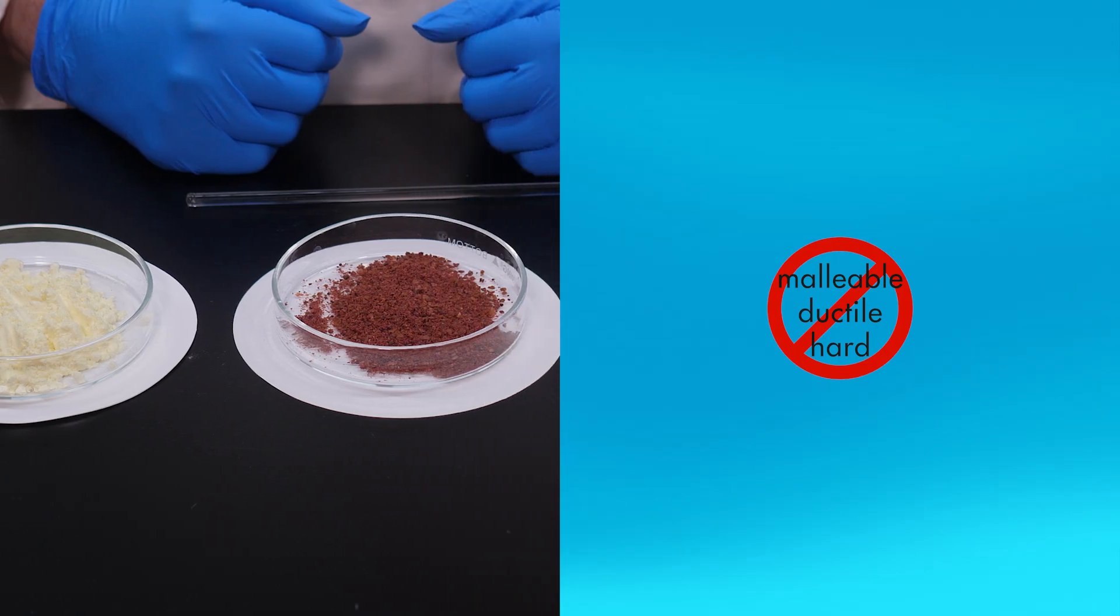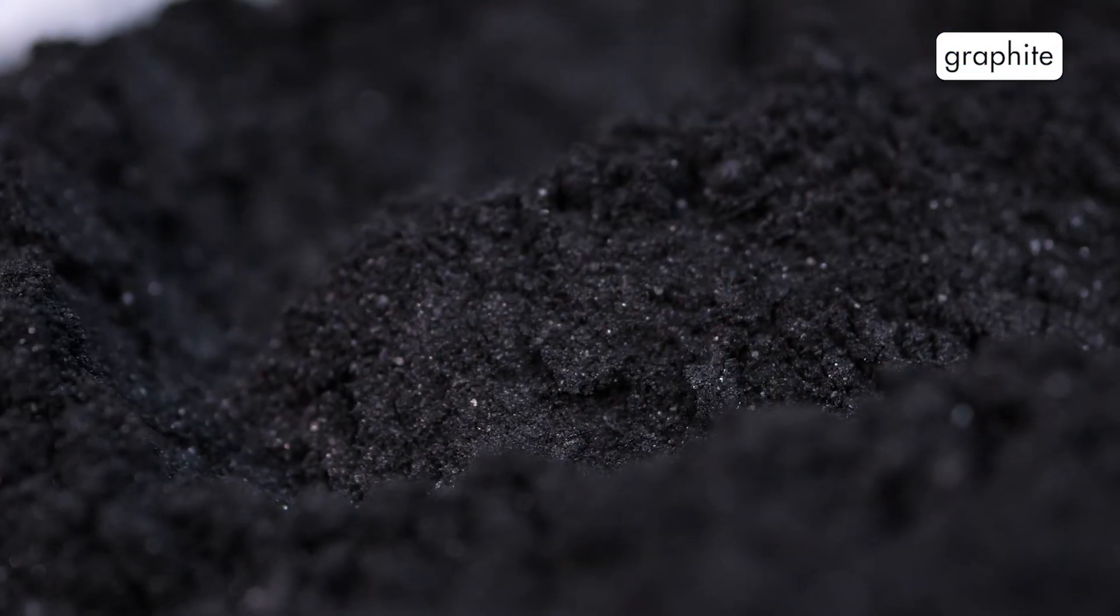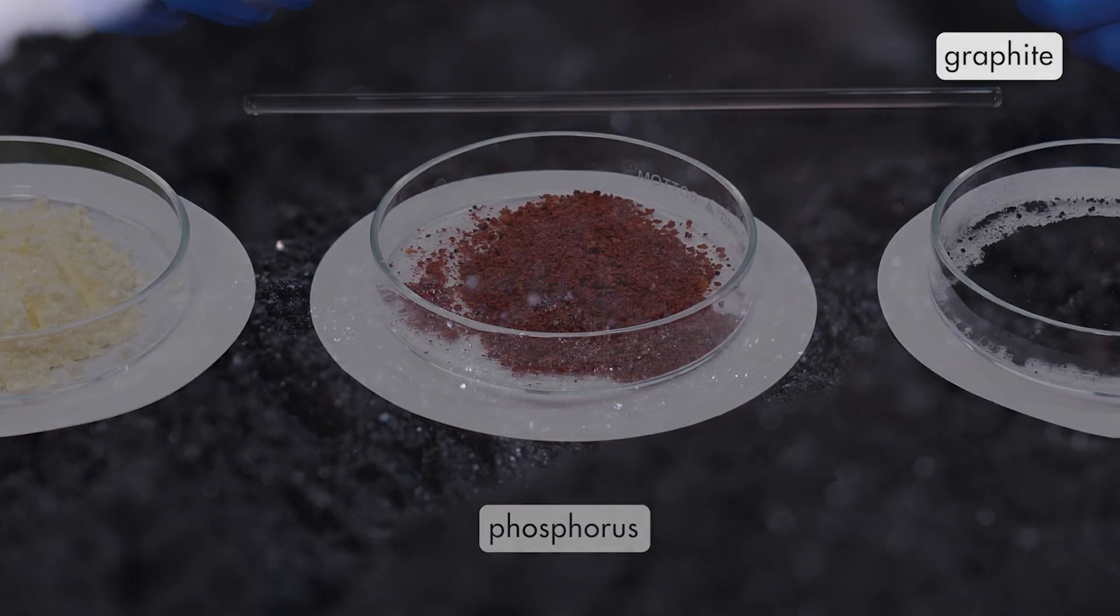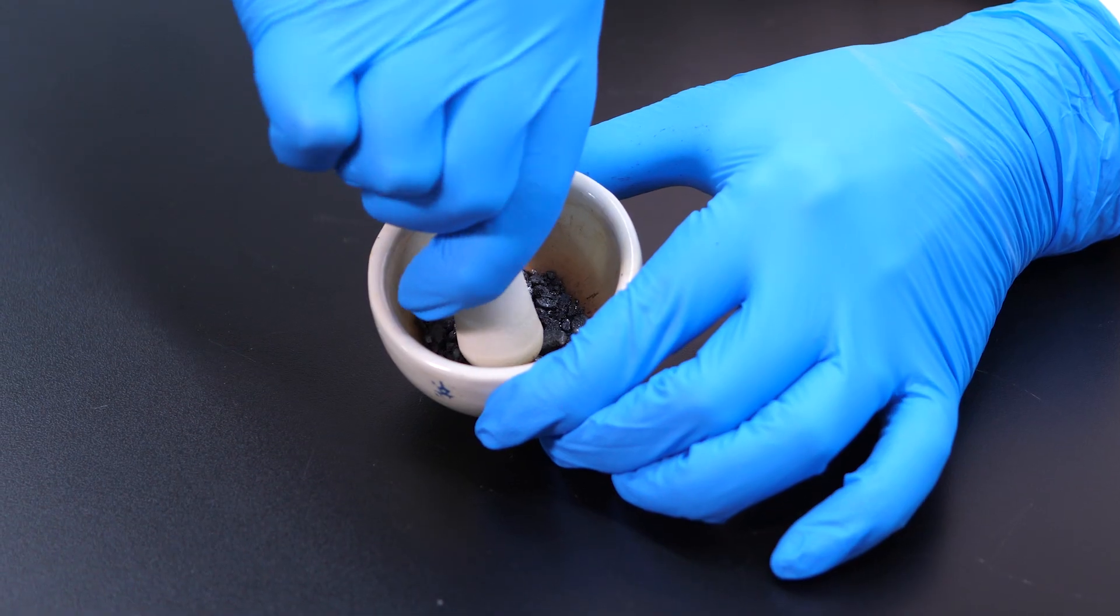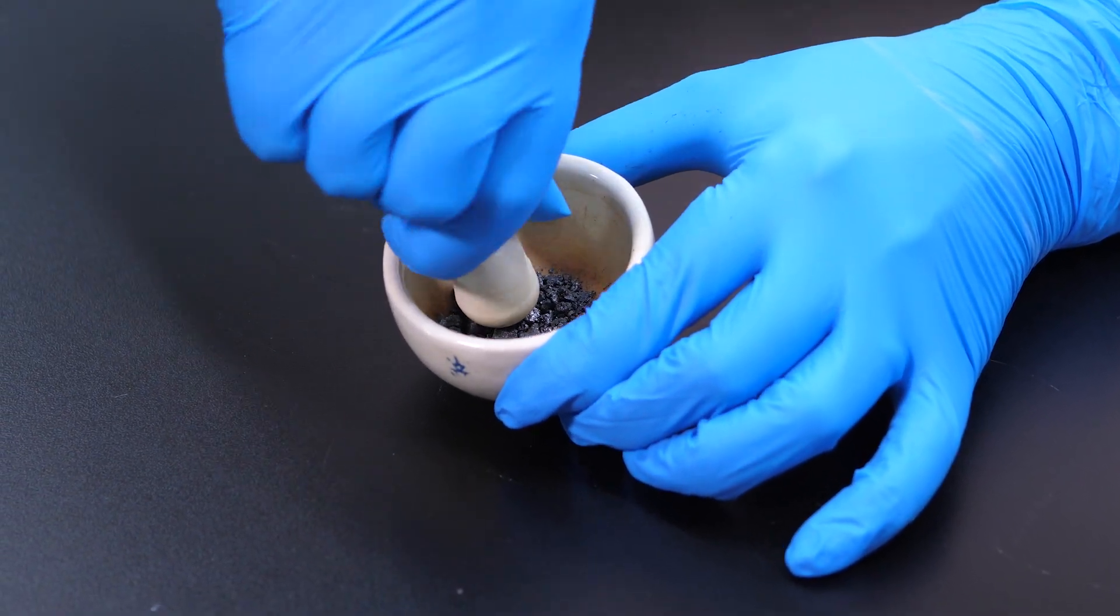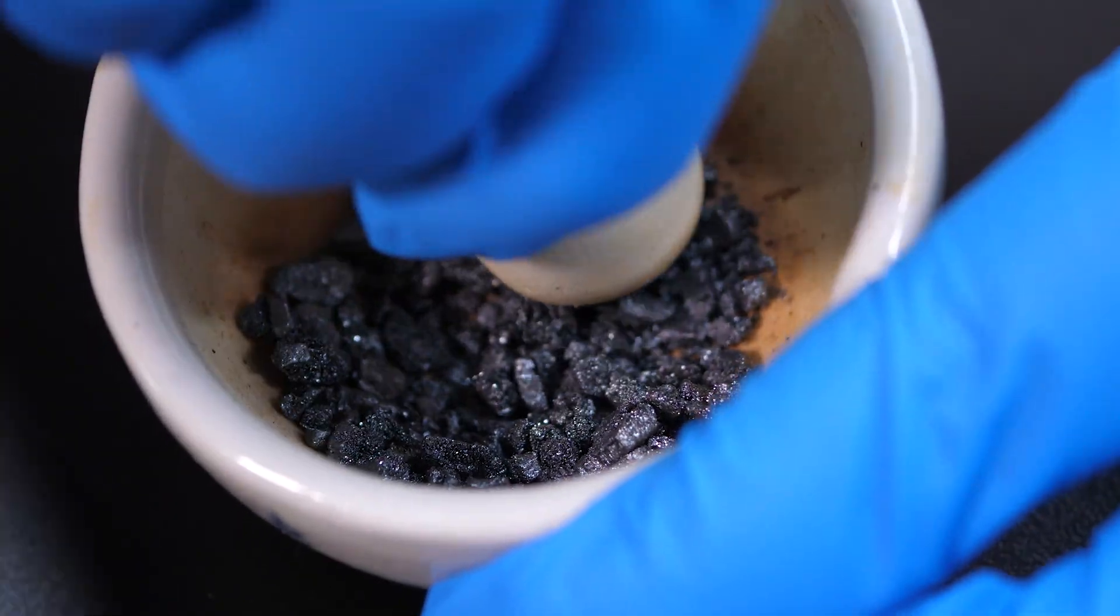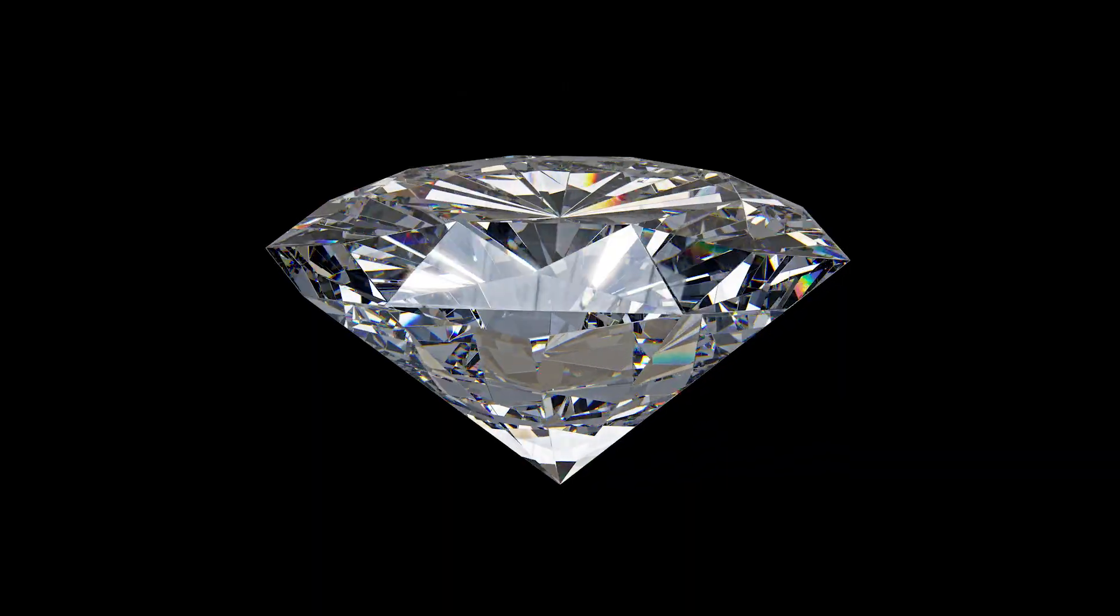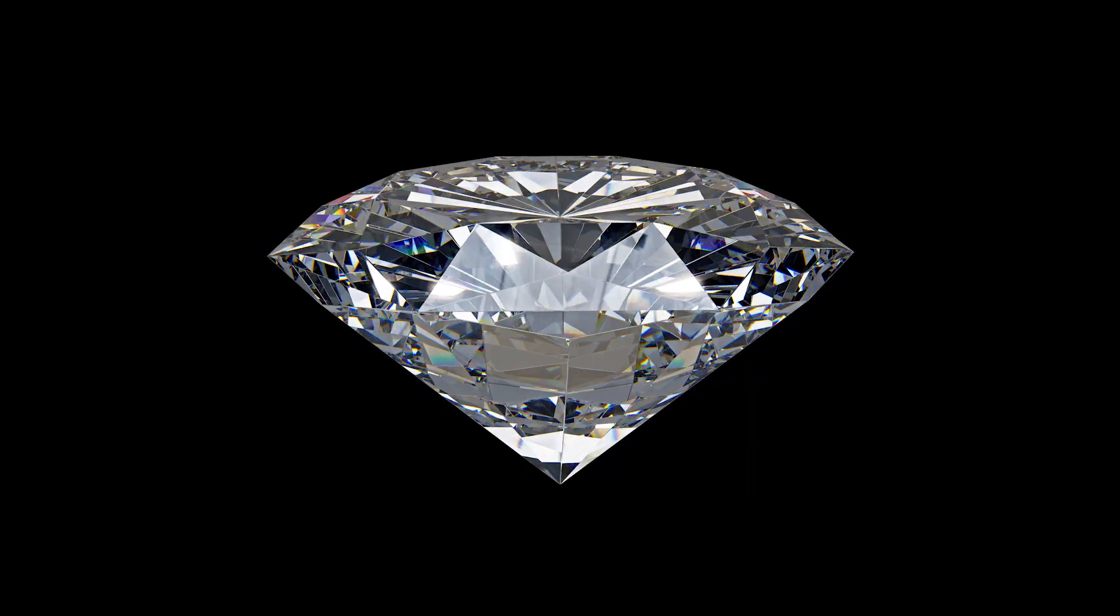Nonmetals are not malleable, ductile, or hard. Some nonmetal solids, such as graphite and phosphorus, are powdery. A few nonmetal solids, such as iodine, are crystalline and brittle. If we grind up iodine crystals, they crush to form a powder. Carbon is an exception, since diamond is the hardest natural substance on Earth.